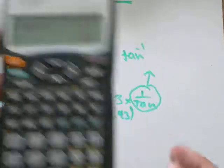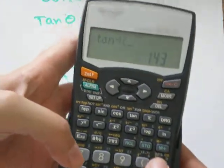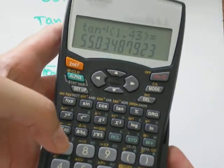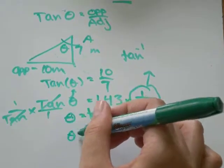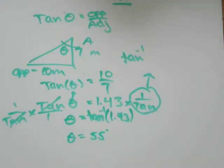And this is when you use second function tan on your calculator. So, I'll go second function tan 1.43 equals, I get 55.0. So, theta equals 55 degrees.